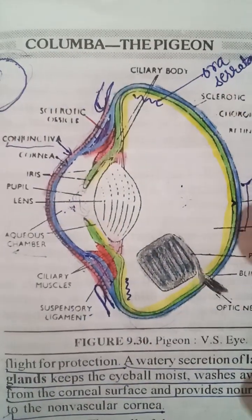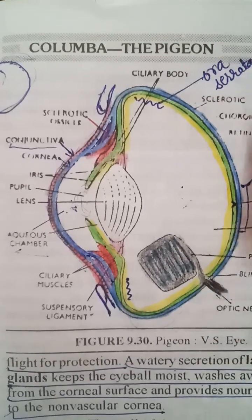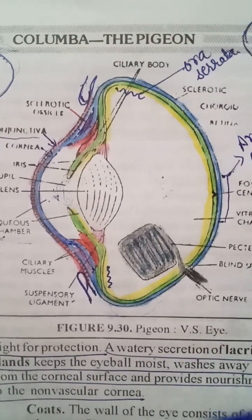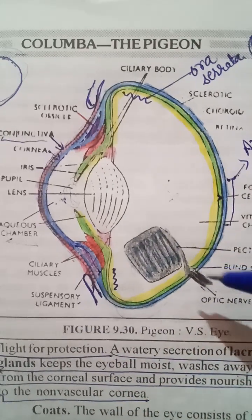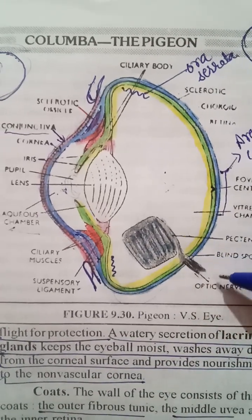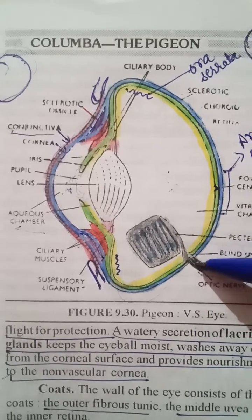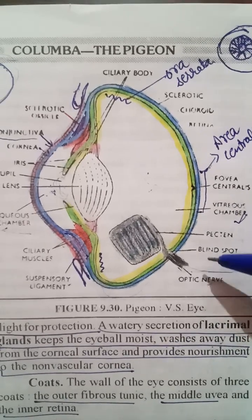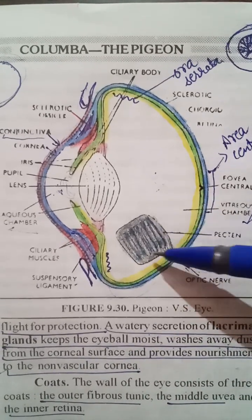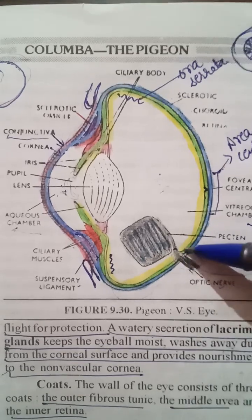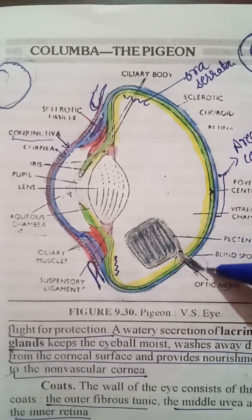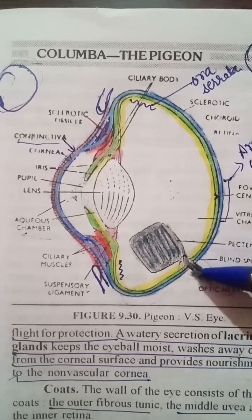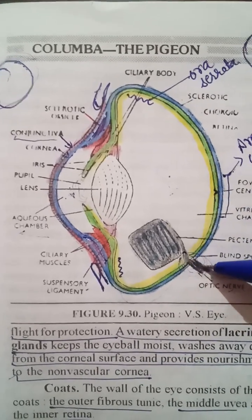Now we will talk about the blind spot and yellow spot. There is a portion from where the optic nerve originates and moves backward to connect to the brain — this is the second cranial nerve. At this portion where the optic nerve originates, it breaks all three coats of the eye, and that is why there is no image formation here. This spot is therefore termed the blind spot.